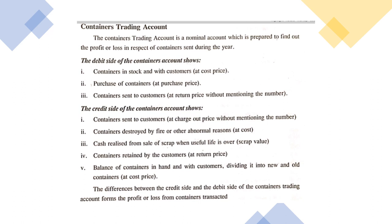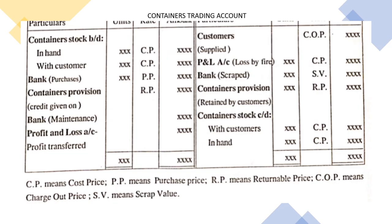An important item is containers returned by customers, which is also a provision. Customers are allowed sufficient time to return containers, but some customers are not able to return them in time. Those containers — where the time to return has been reached but they haven't been returned — are recorded on the credit side of the containers account at the returnable price. The last item is the closing stock of containers in hand as well as with customers, recorded at cost price. The difference between the debit and credit side is profit or loss.